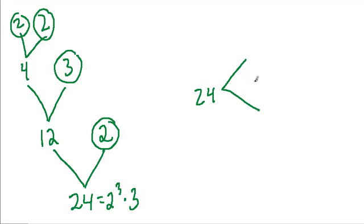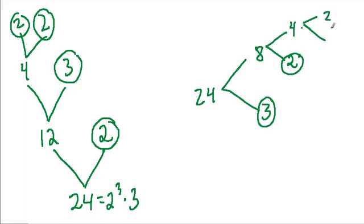And I could write this in any order I want. I could say, well, 24 is 8 times 3. Circle the 3, that's prime. What does 8 equal? Well, that equals 4 times 2, and 2 is prime, and then 4 is equal to 2 times 2.